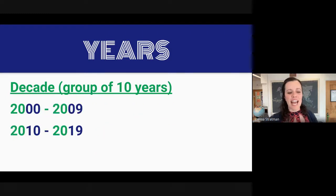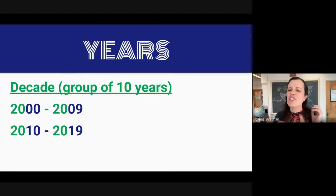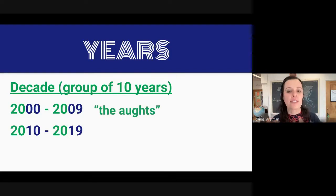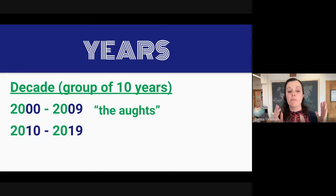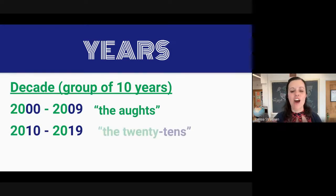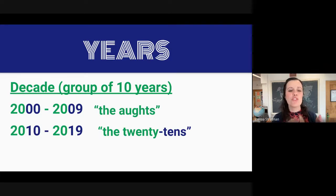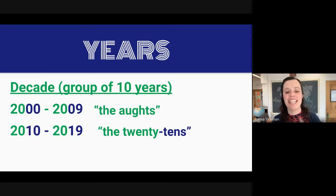Let's look at some exceptions to this rule. The years 2000 to 2009 have a strange name in English — we call them the aughts. The next decade, from 2010 to 2019, are called the 2010s.